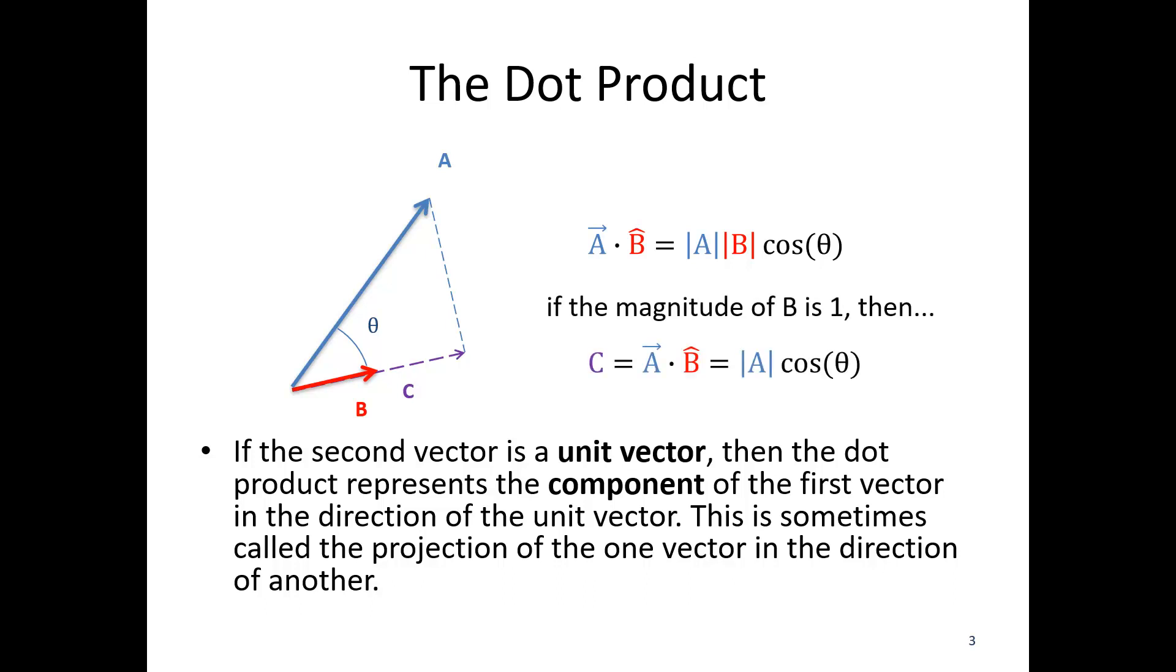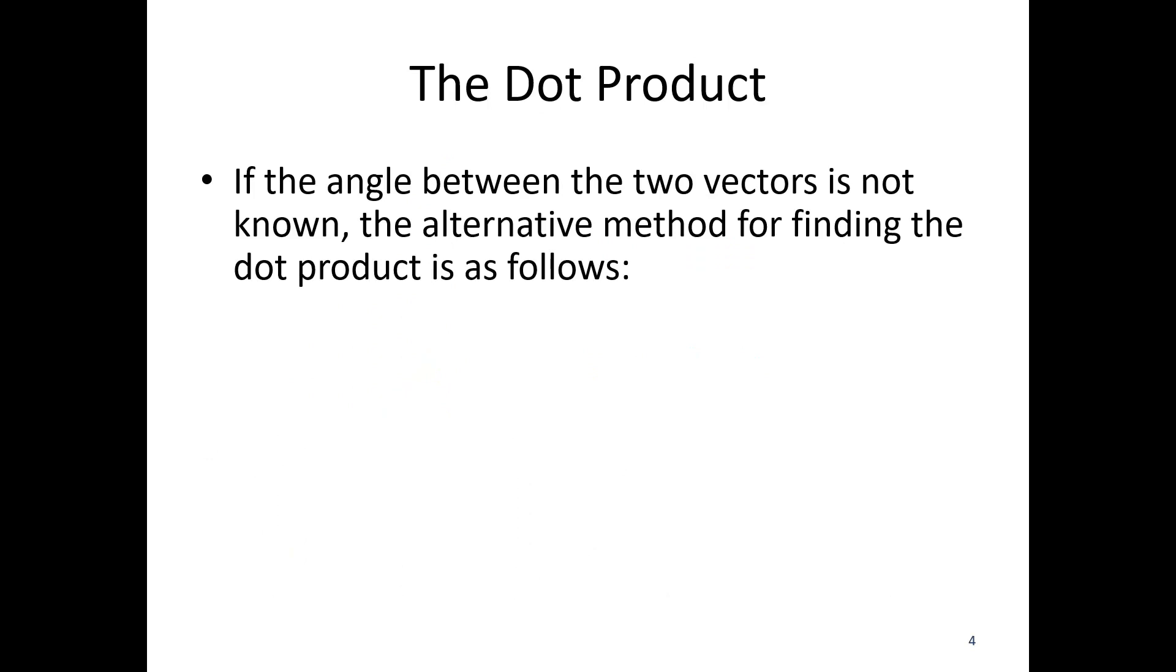So if the angle between the two vectors is not known, so theta might be a problem if we don't exactly know what is going on. There is an alternative method for finding the dot product. And it's as follows. So we would simply, if we want to know a dot b, a and b are vectors.